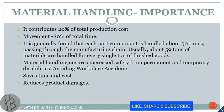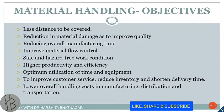Material handling is important because it contributes 20% of the total production cost and 80% of the total time is consumed in the movement of material. It is generally found that each part or component is handled about 50 times when passing through the manufacturing chain. About 59 tons of material are handled for every single ton of finished goods. Material handling ensures safety from permanent and temporary disabilities, helping to avoid workplace accidents. It saves time and cost and reduces damage to the product, making it very important to consider in any plant or factory.